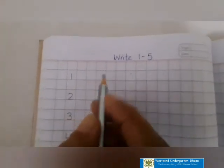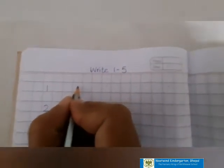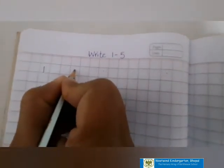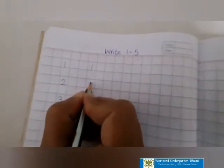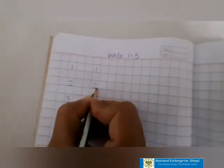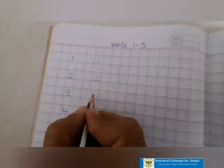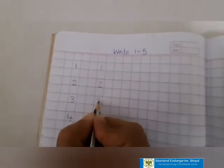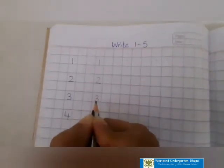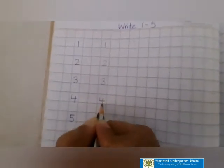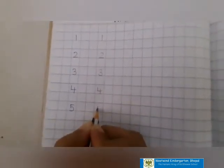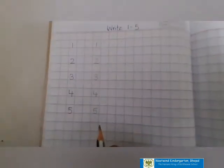Leave two boxes and write number 1 like this and touch the bottom line. Again leave two boxes and write number 2. Again leave two boxes, write number 3 and touch the bottom line. 4. 5. Okay? You have to write like this.